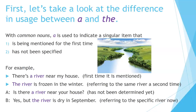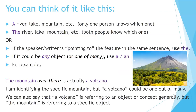Yes, but the river is dry in September — referring to the specific river now. You can think of it like this: a river, lake, mountain, etc. — only one person knows which one. The river, lake, mountain, etc. — both people know which one. Or if the speaker or writer is pointing to the feature in the same sentence, use the.